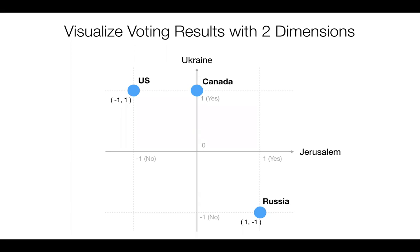The US voted -1 for Jerusalem and 1 for Ukraine, so US is positioned on the left, top side. Canada abstained on Jerusalem so their X value is zero, and voted yes on Ukraine so Y is 1, placing Canada at the top on the Y-axis. Russia voted in the almost opposite direction from the US. So we can express these three countries' voting results in a two-dimensional space.